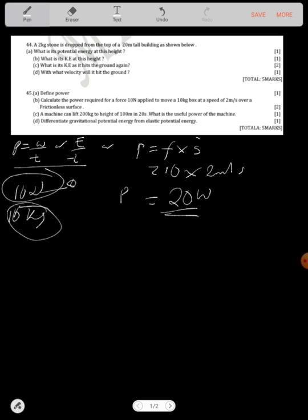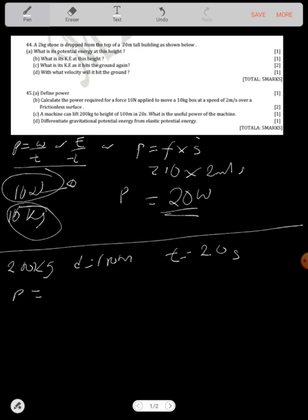You only use the force being applied, not the force of the object. A machine can lift 200 kg to a height of 100 meters in 20 seconds. What is the useful power? Now here we have time. On this question we have a mass of 200 kg, we have distance of 100 meters, we have time which is 20 seconds. Now we know that power is equal to work done over time taken.